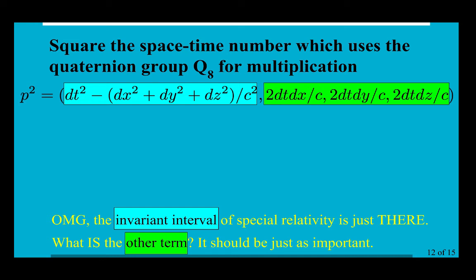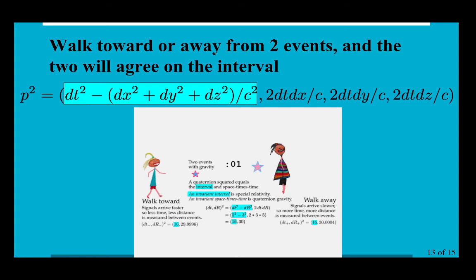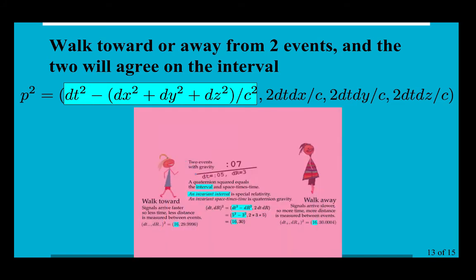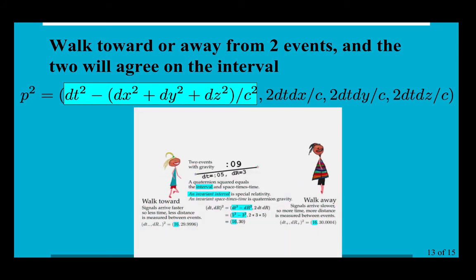Yeah, okay, what about the other term? I mean, it's the next door neighbor, it's got to be just as important. You can't say wow, that one's hugely important in special relativity and lucky, and this other one doesn't do anything. So let's think about the special relativity thing: you can walk towards or away from a pair of events.